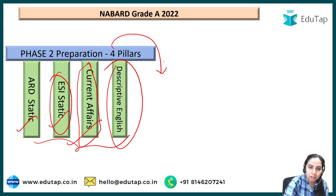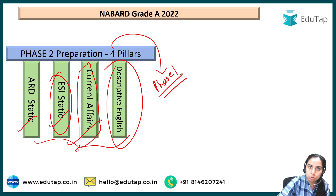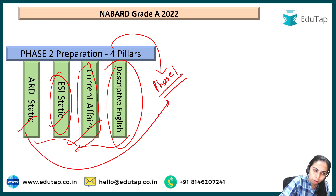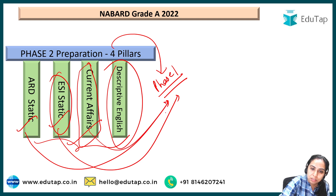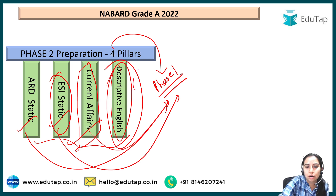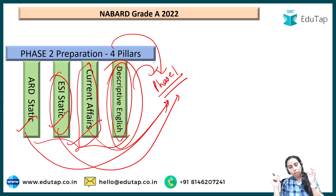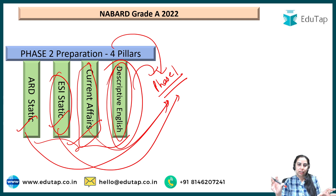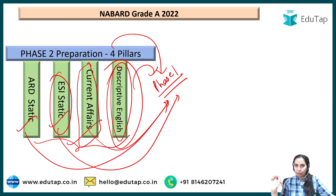When we talk about Phase 1, the same pillars will be repeated. ARD is going to be there, ESI static will be there, current affairs will be there. Apart from descriptive English, here we will get sections like Quant, Reasoning, and English. Those will be more important than descriptive English in Phase 1. This is what you need to know as the first thing.